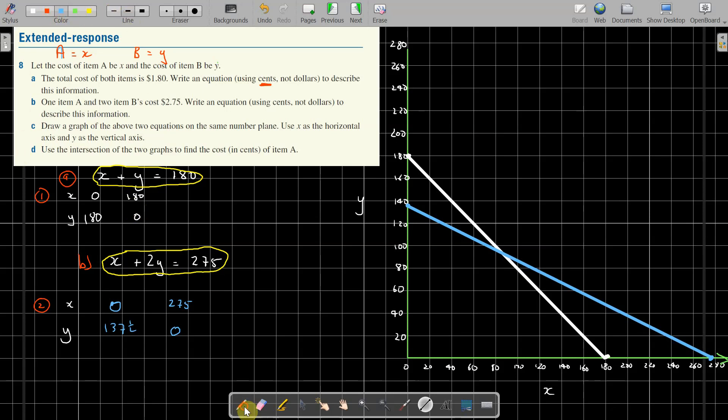Let's go back to normal here. Part D: use the intersection of the two graphs to find the cost in cents of item A. And I imagine where these two lines cross is what the two items actually cost. So item A is equal to X.